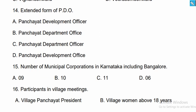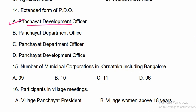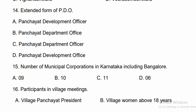Question fourteen: The expanded form of PDO is Panchayat Development Officer — that is the correct option. Question fifteen: The number of municipal corporations in Karnataka including Bangalore is 11. Option C is the correct answer.